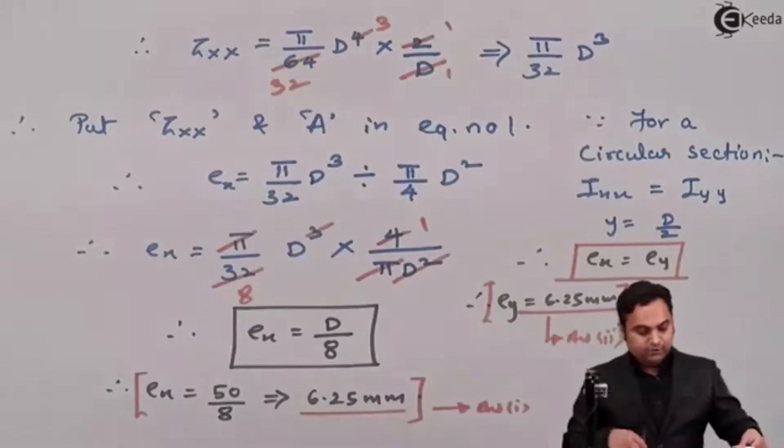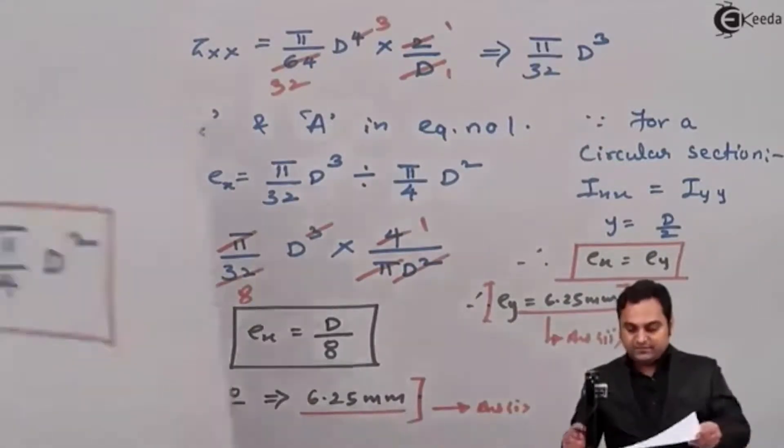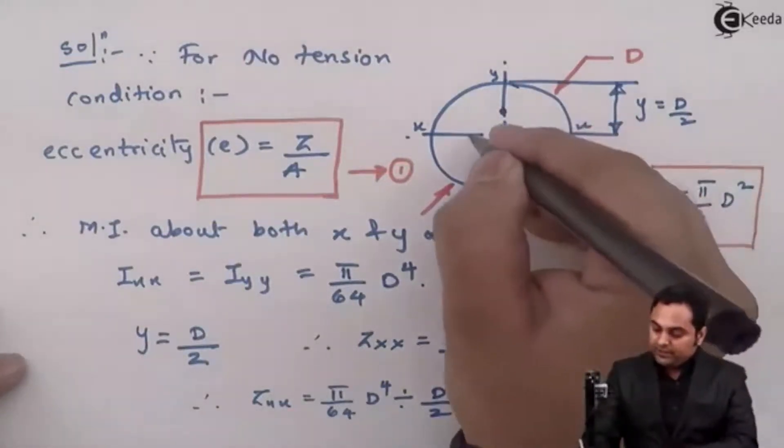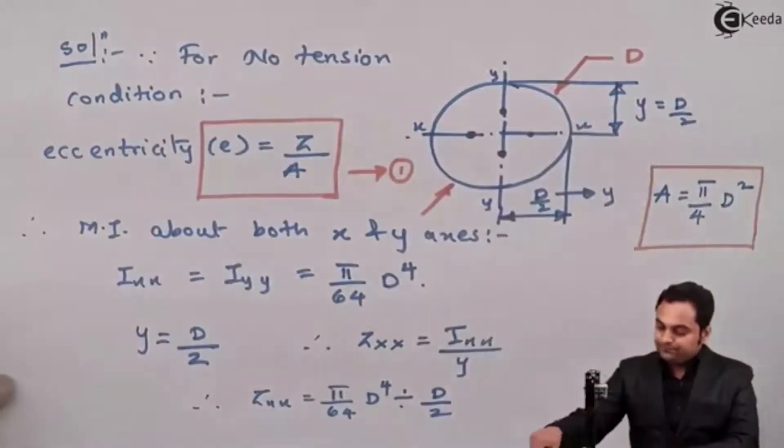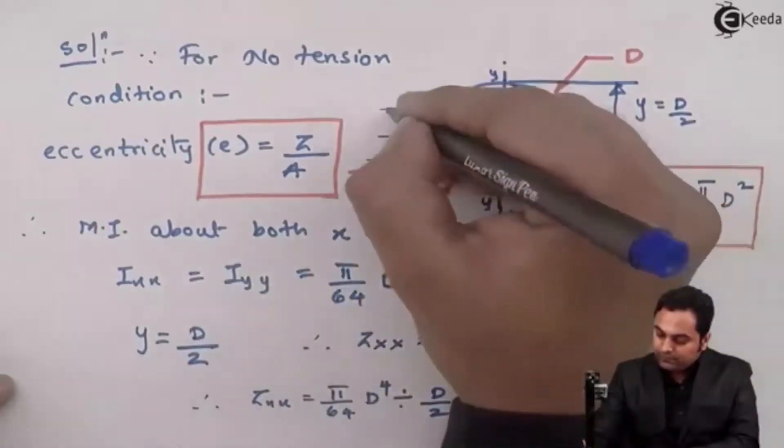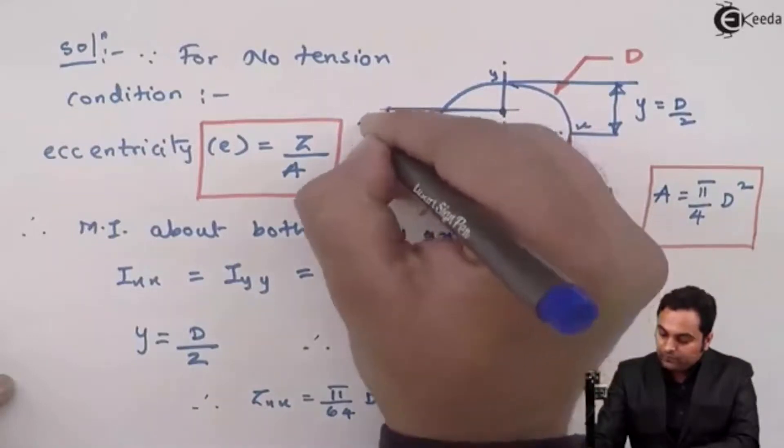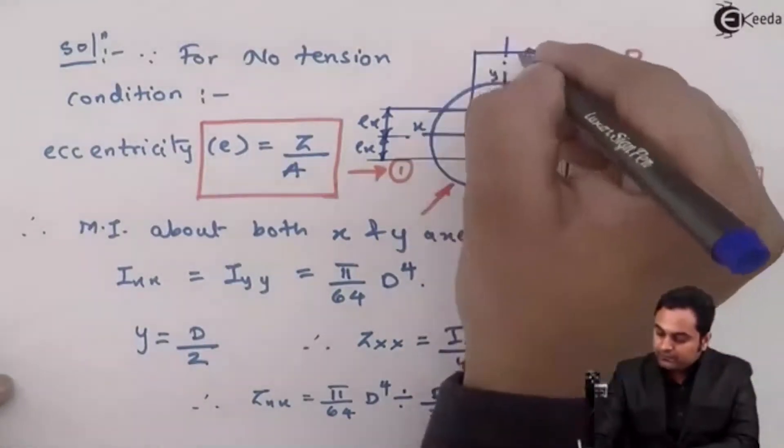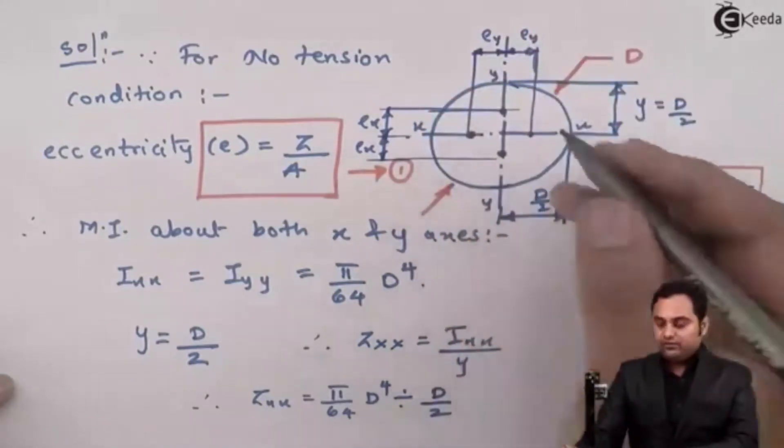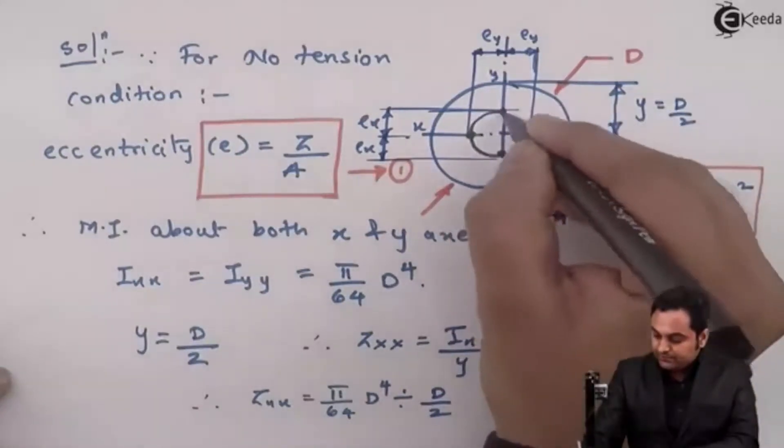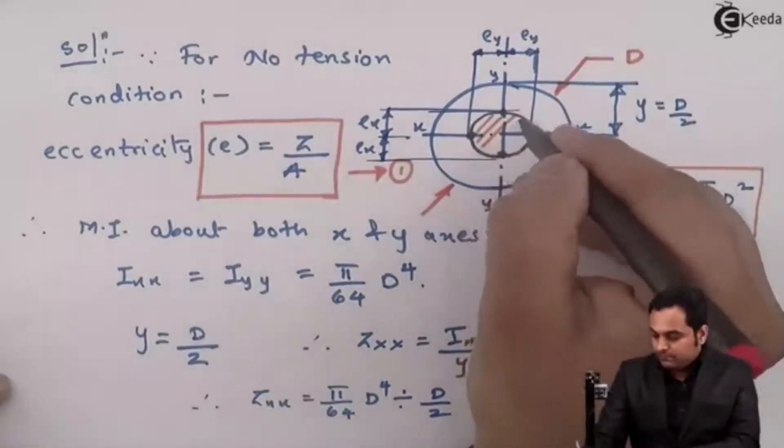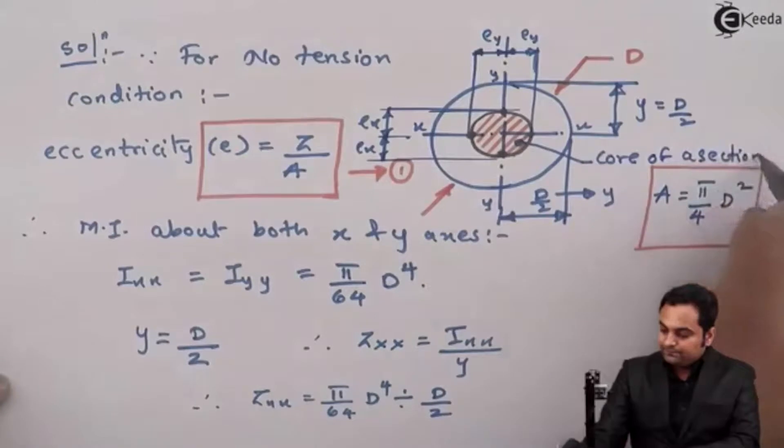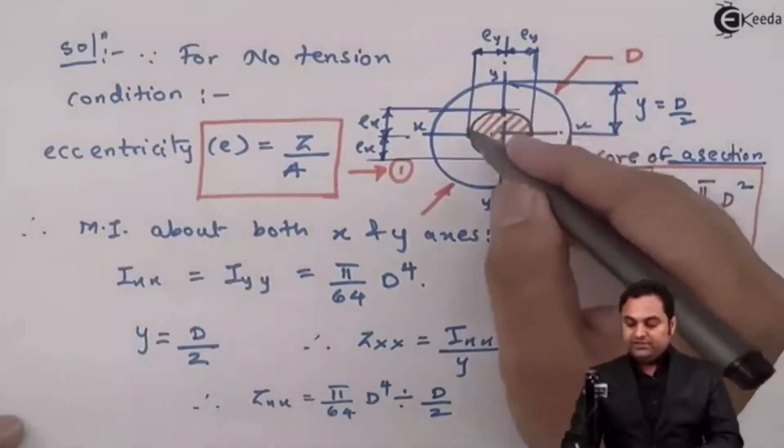After getting EX and EY, I will plot it onto the diagram. So eccentricity with respect to X is 6.25 mm, so if I measure the distance from X that will be 6.25 mm on both the sides I have to measure. Similarly with respect to Y that is also 6.25 mm. Both are having the value of 6.25 mm. So I will draw a circle from this. And when I draw this circle it is called as core of a section.